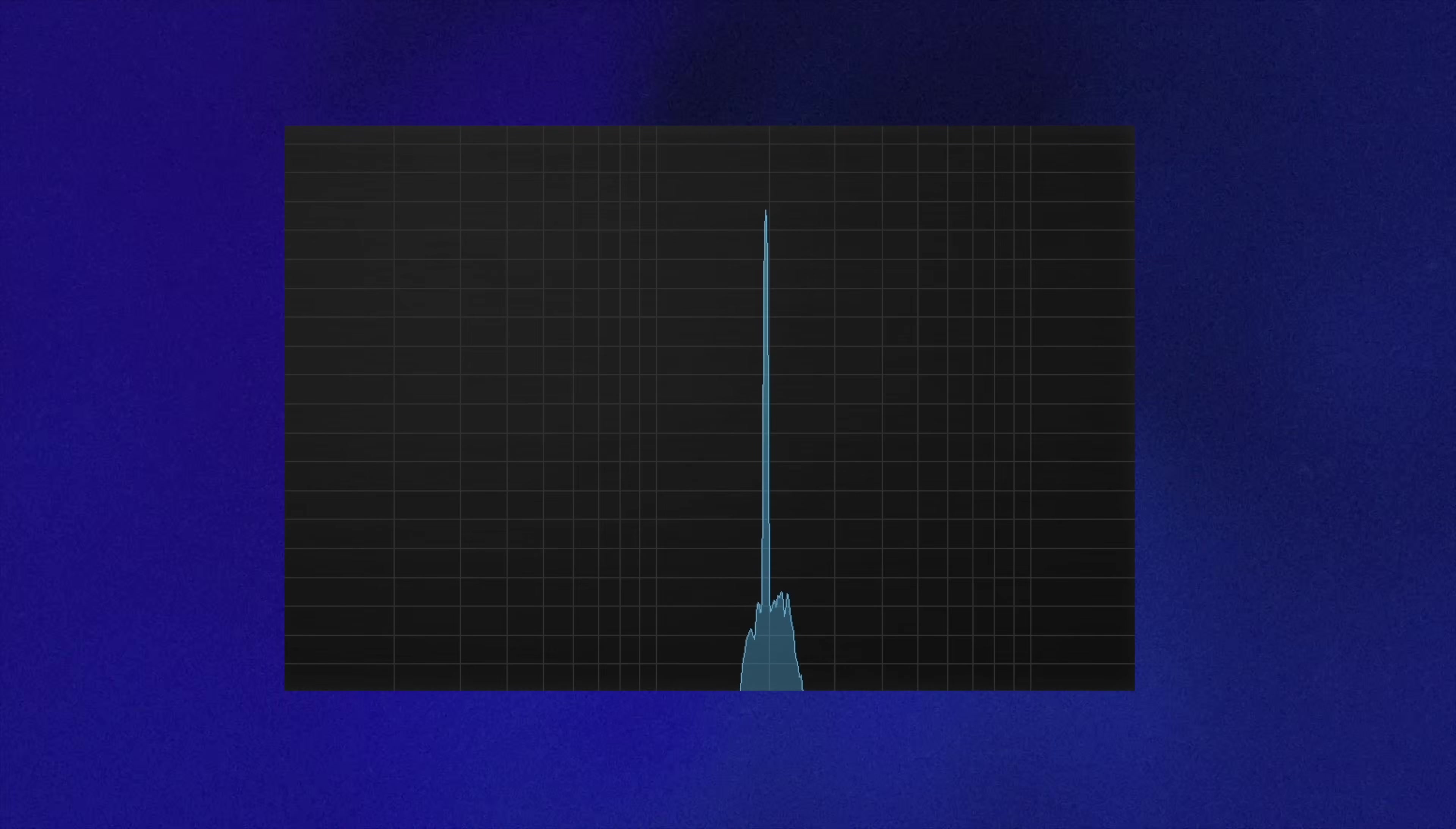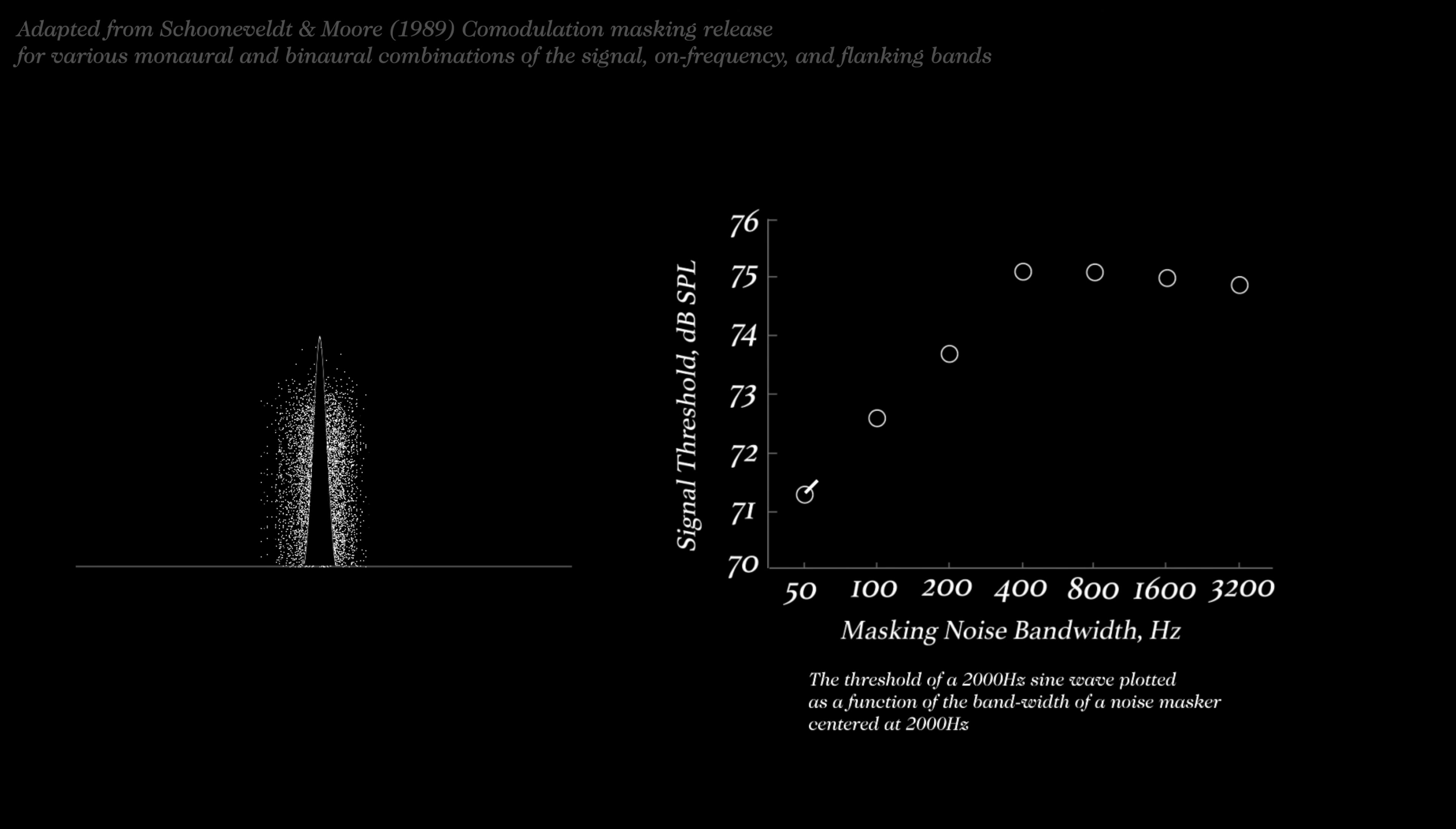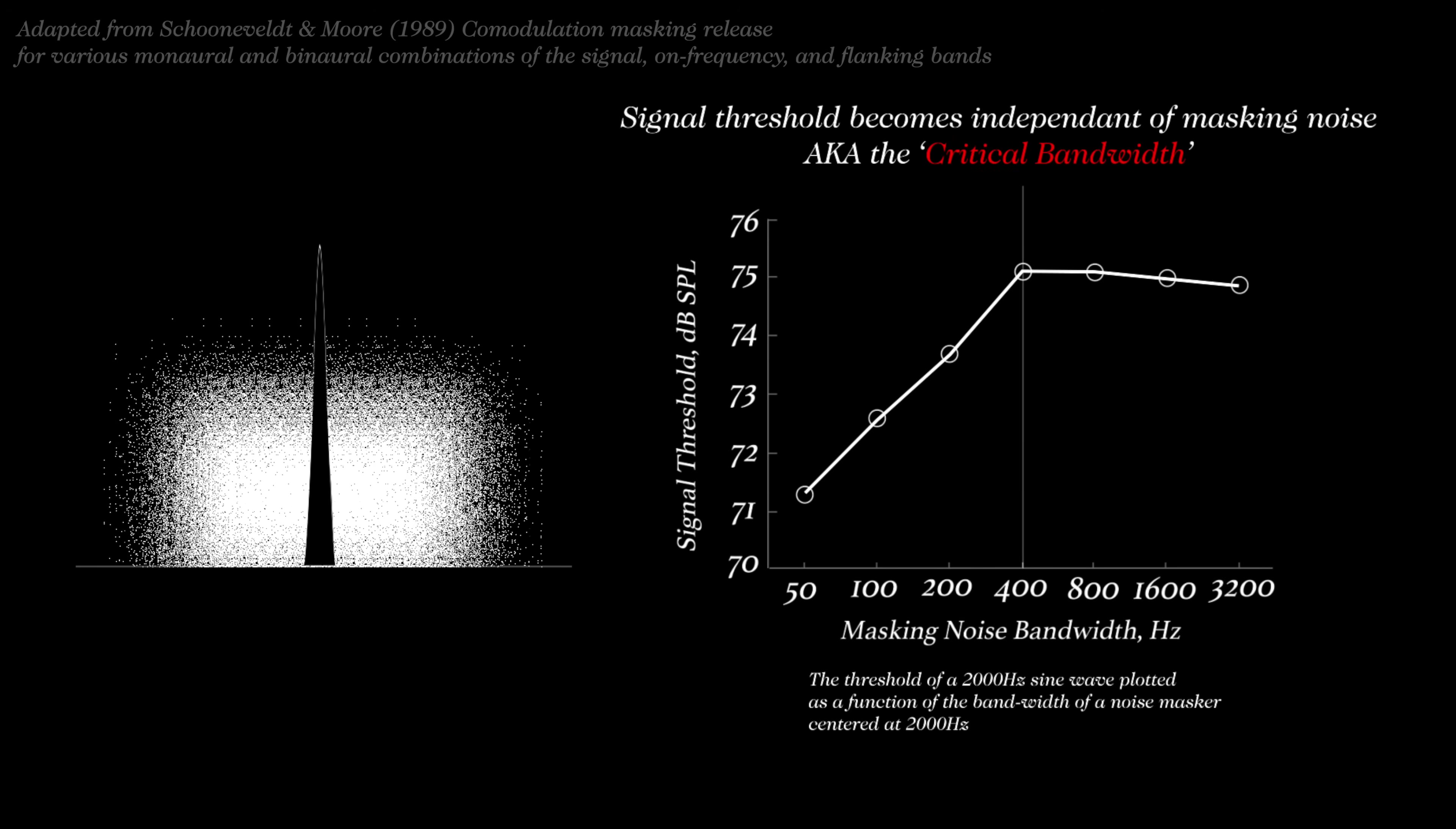A 1989 study showed that adding a thin band of white noise around a specific frequency reduces the perceived loudness of that frequency. The study showed that if we have a tone and slowly fill in the space around it with noise, we have to increase the level of the tone for it to remain at the same volume, up to a certain point, after which increasing the bandwidth of the noise doesn't change the perceived level.